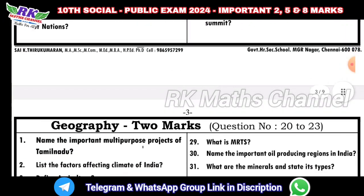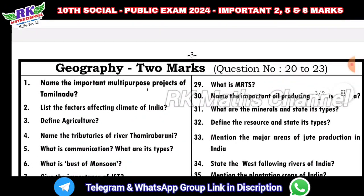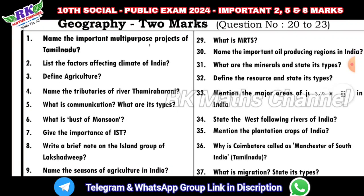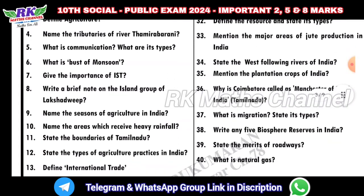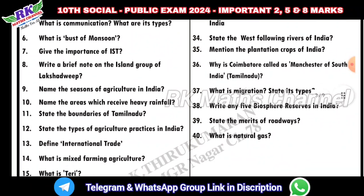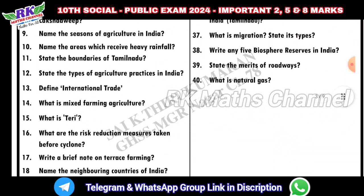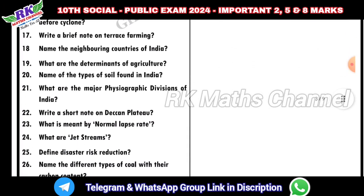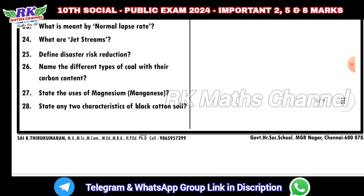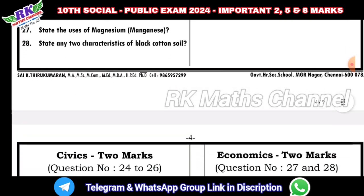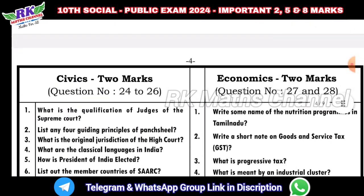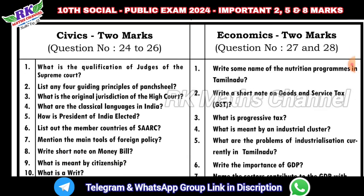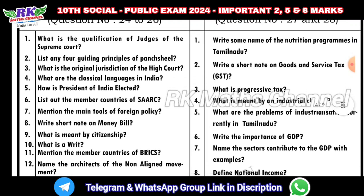Next, geography — question number 20 and 23, that's 2-mark questions. The PDF link is in the description below — you can download it. Geography 2-mark questions, next civics question number 24 and 26, and economics question number 27 and 28 — those are 2-mark questions.